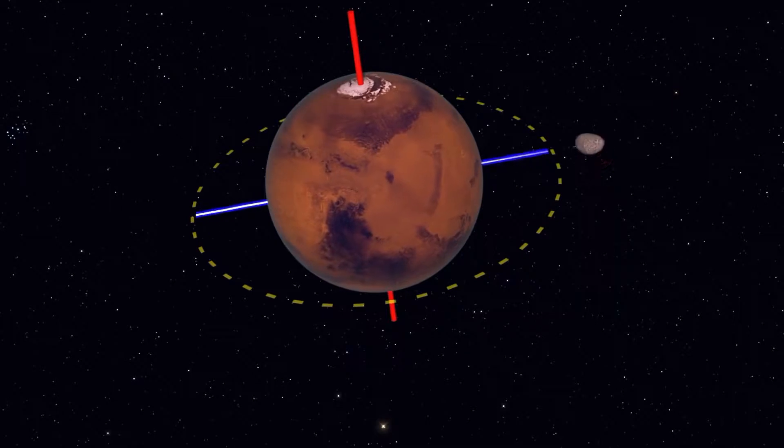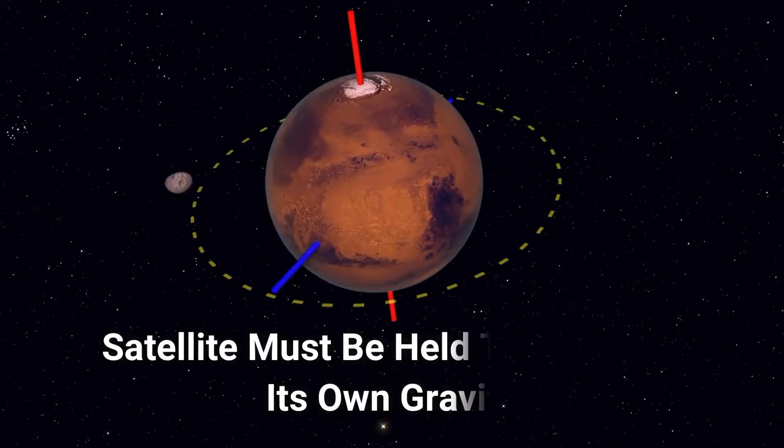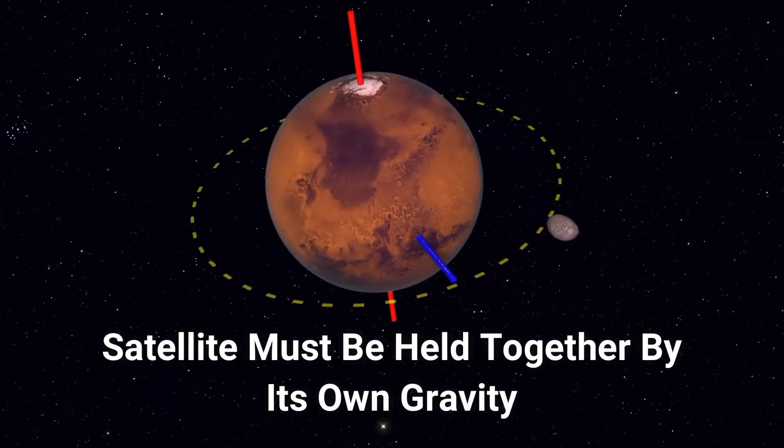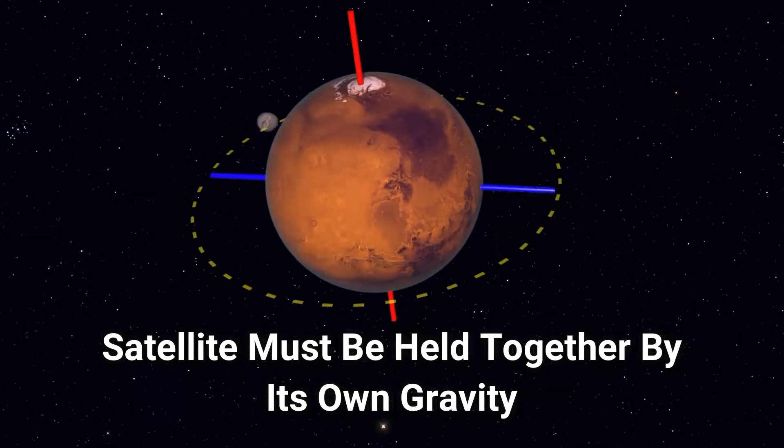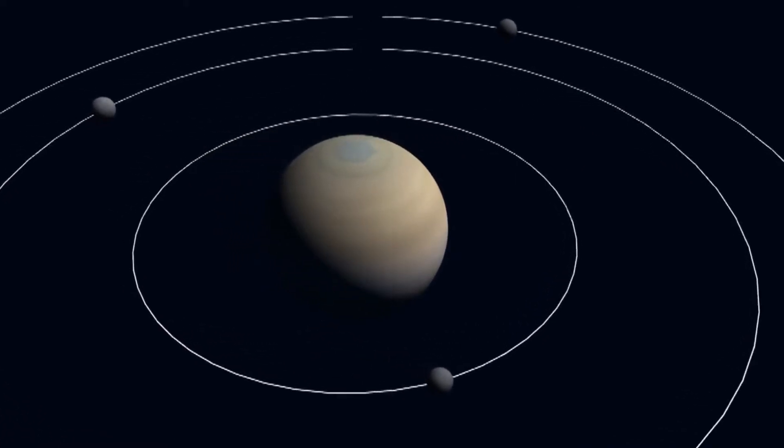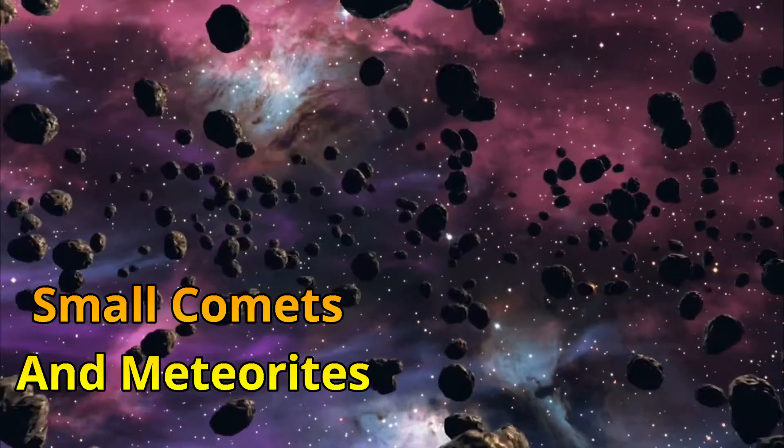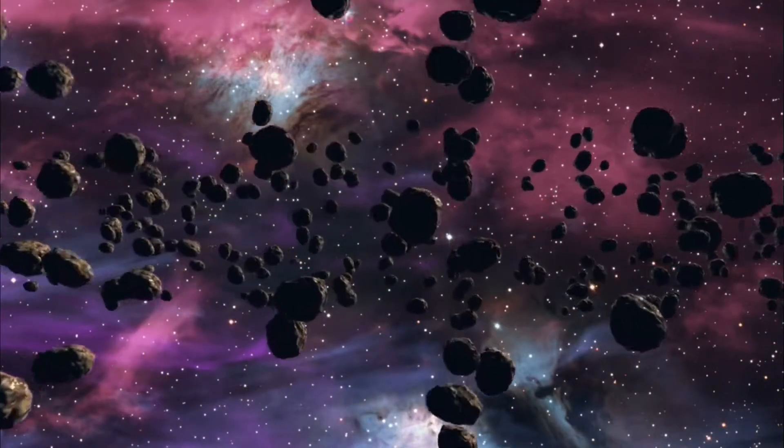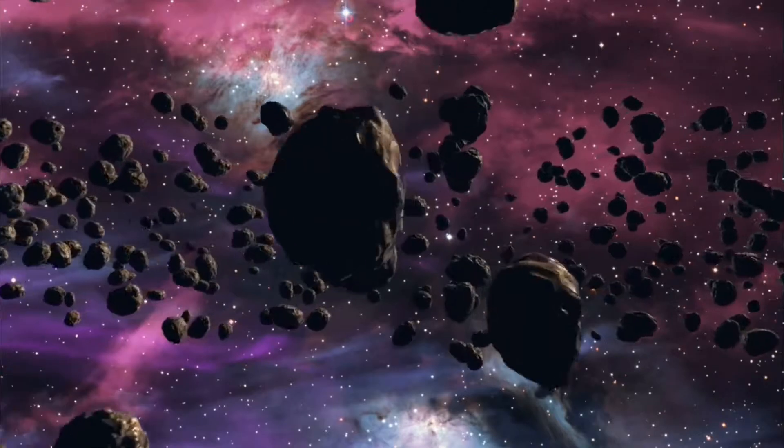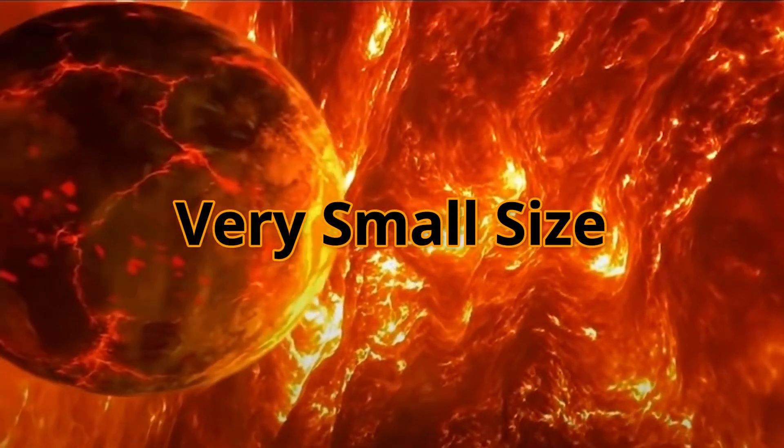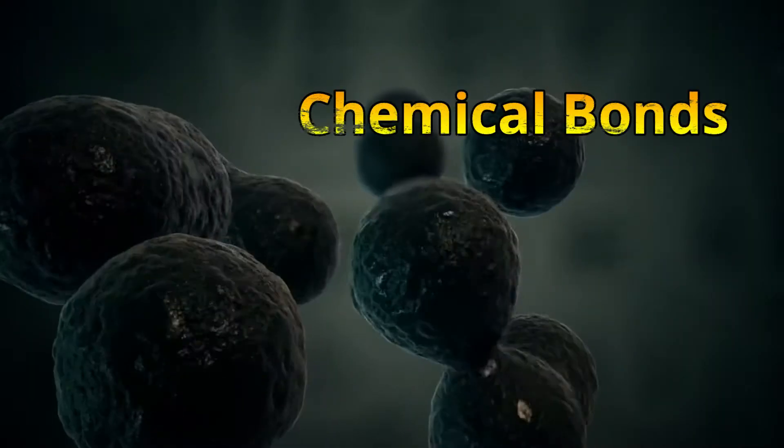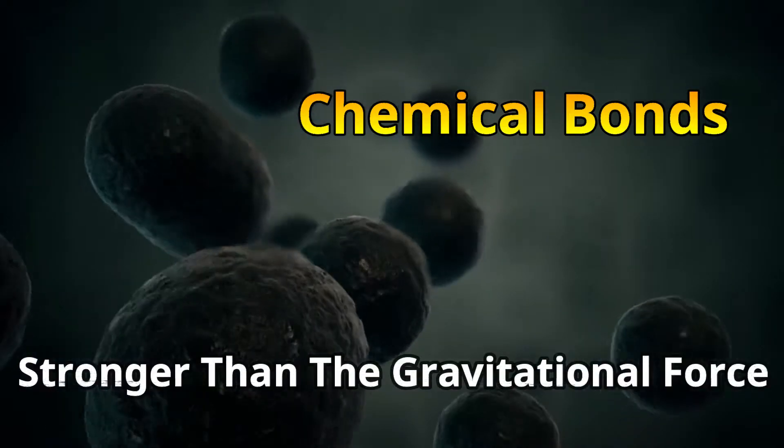First, for a planet to induce a breakup, the satellite must be held together by its own gravity. That is the case for celestial objects large enough to become roughly spherical, but not for small comets and meteorites. If an object is not spherical, this is an indication that, due to its very small size, it is held together by its own chemical bonds, which are stronger than the gravitational force.